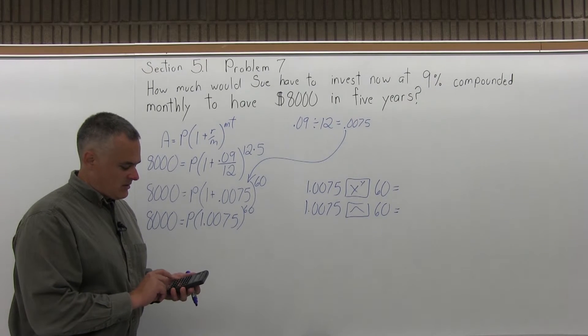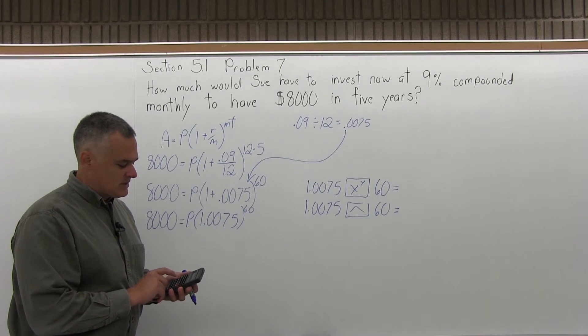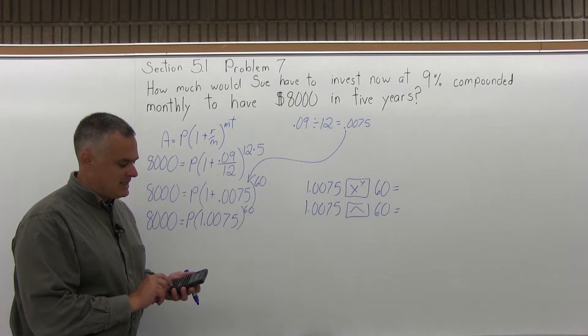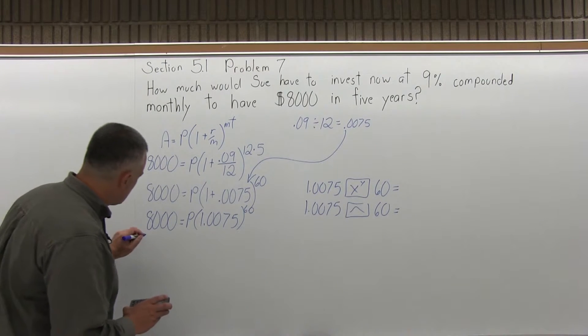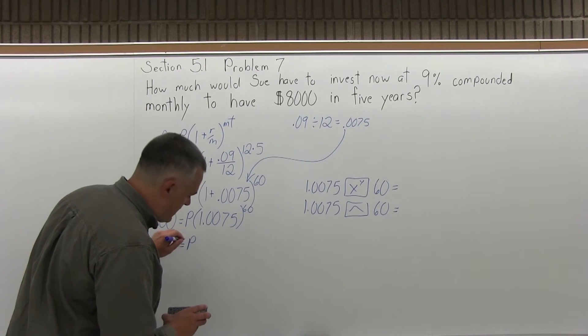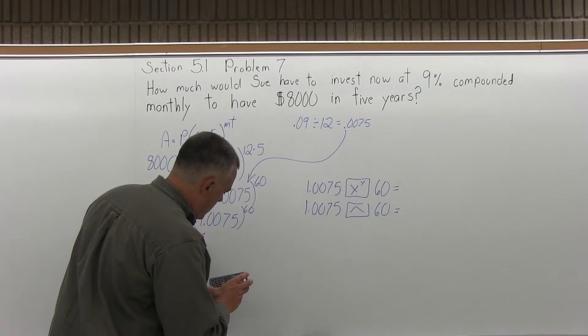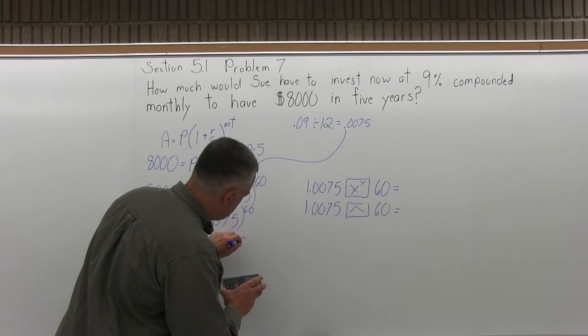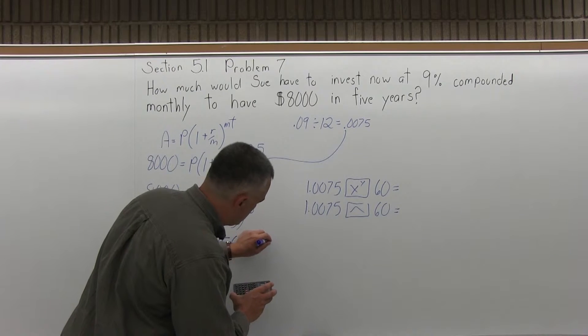So with my calculator, I'll put in the base of 1.0075, press the exponent button, put in the exponent of 60, hit equals, and I get an answer.